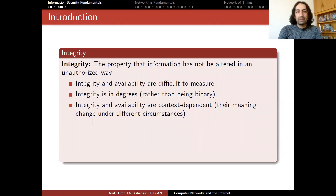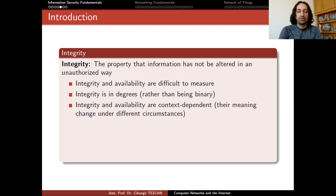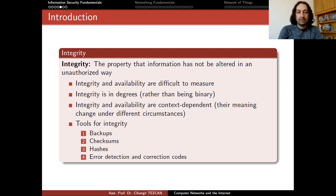Moving on to integrity: it is the property that information has not been altered in an unauthorized way. Integrity and availability are difficult to measure. Integrity is in degrees rather than being binary, and both integrity and availability are context dependent — their meaning changes under different circumstances.